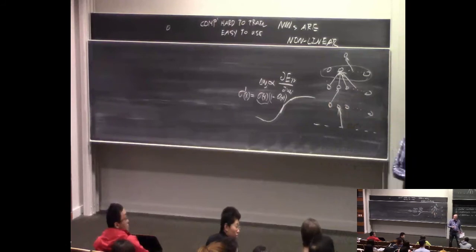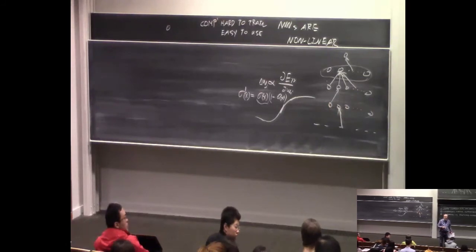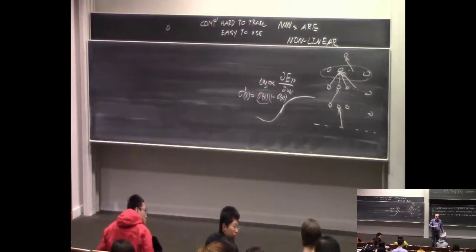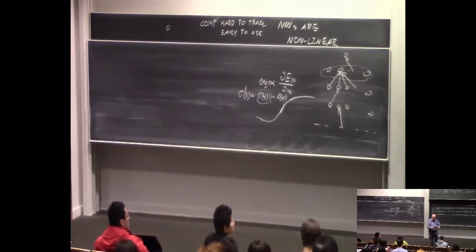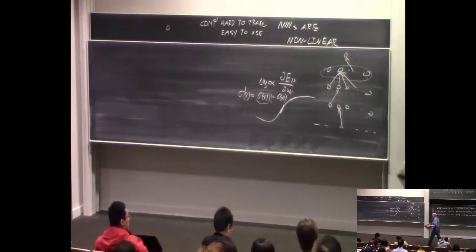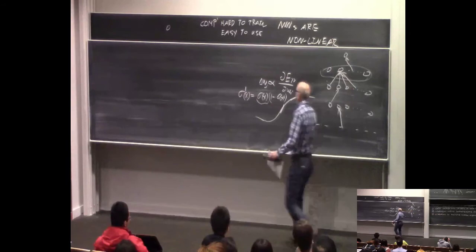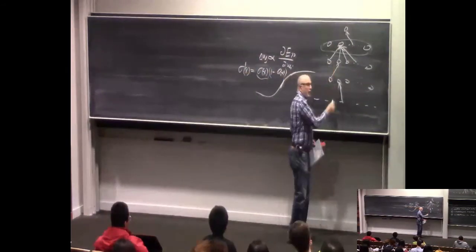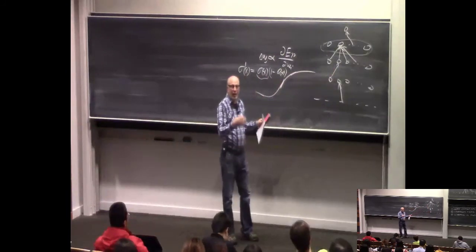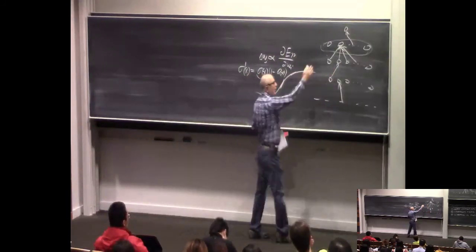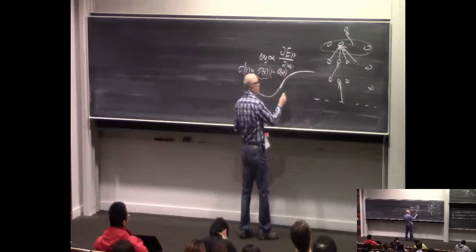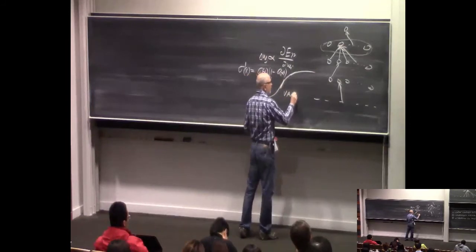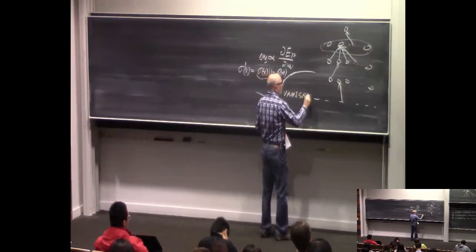Let me talk about regularization and then give a name to this problem. The gradient becoming exponentially smaller in a multi-layer neural network as you go down towards the input is called the problem of vanishing gradients. That was a major stumbling block.